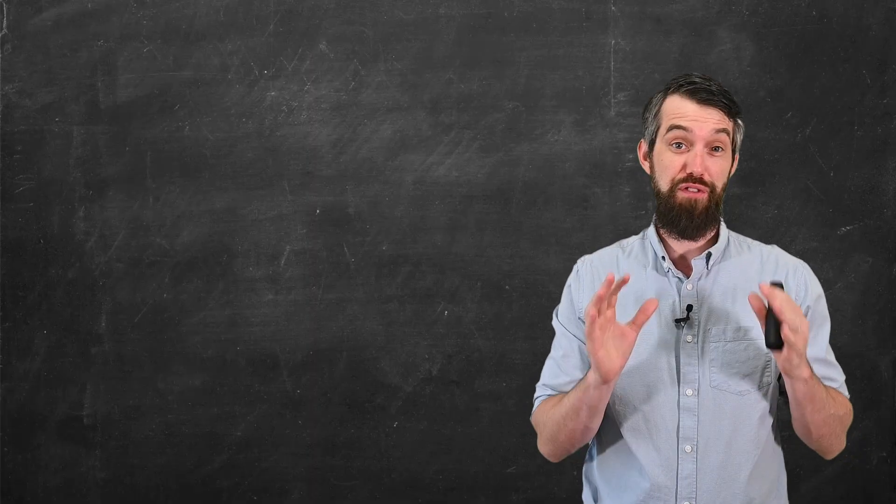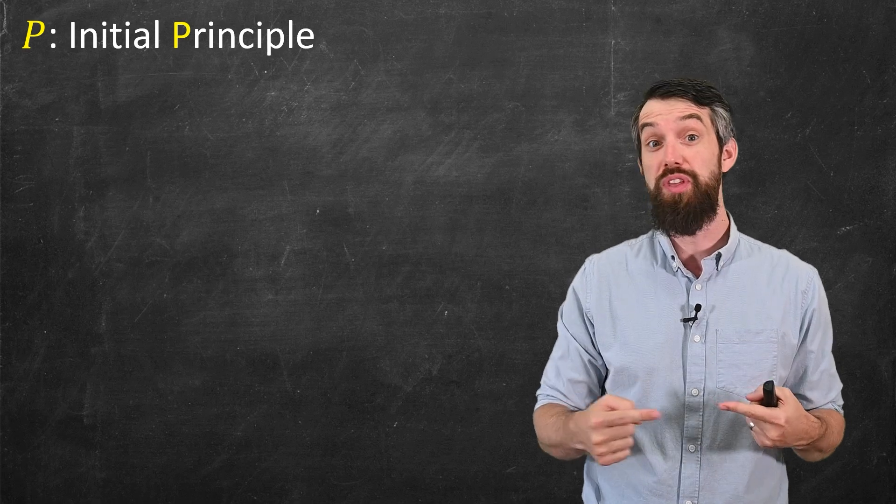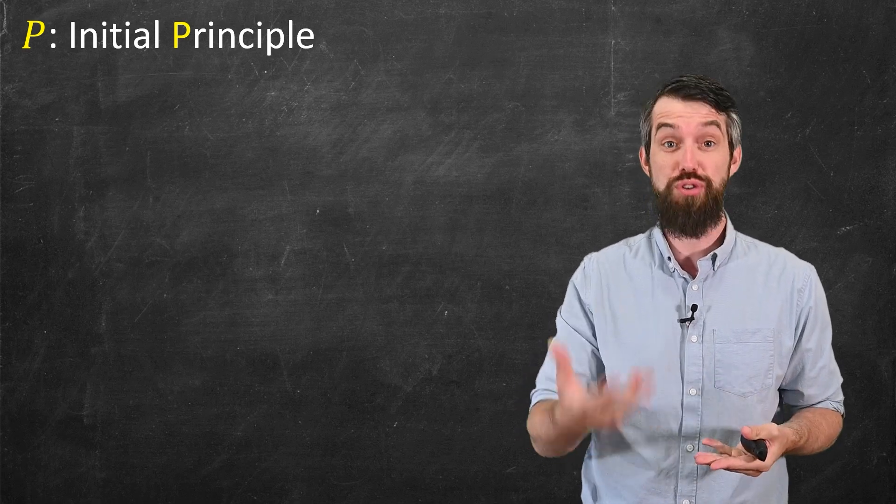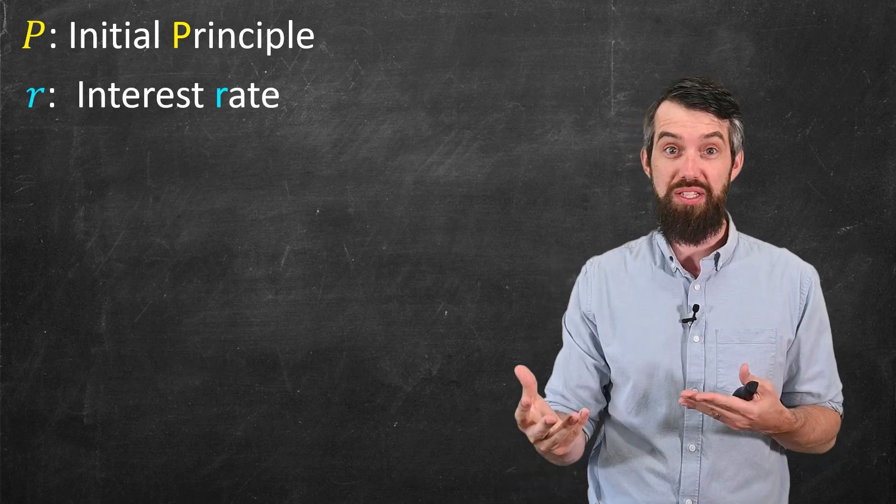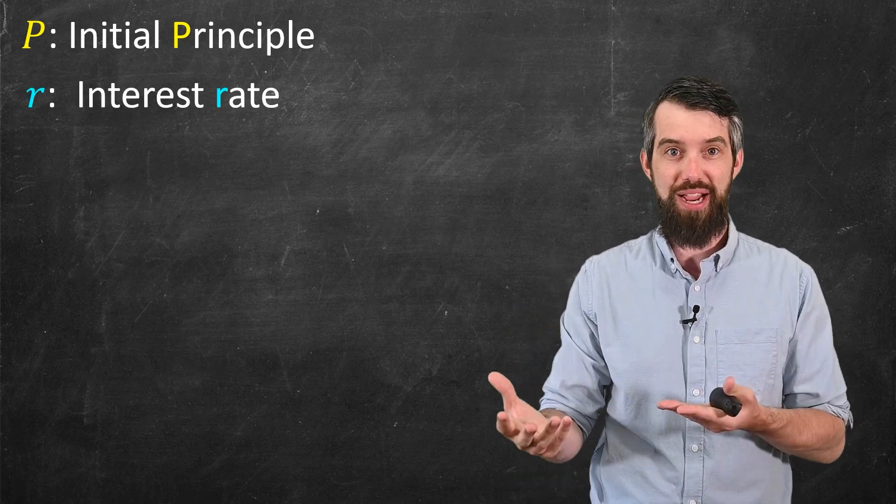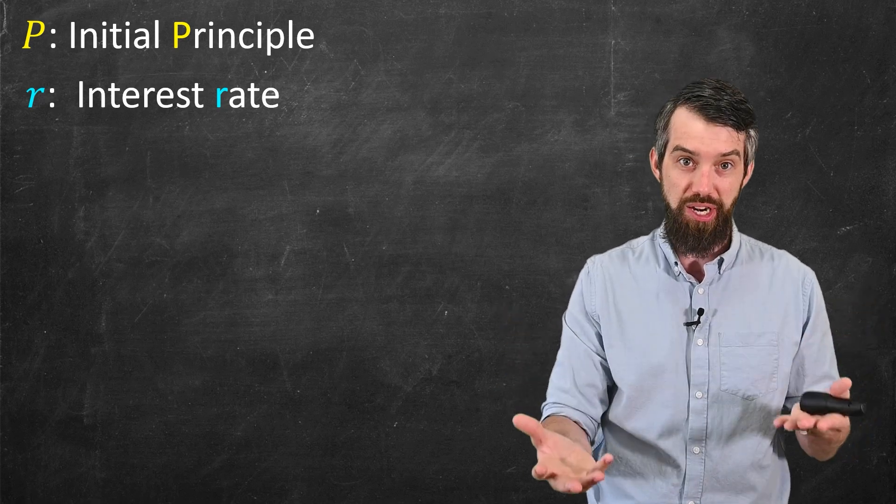So let's try to come up with a formula for this. Let me establish a few terms. I'm going to let P denote the initial principal. For example, $100 would be the amount that would be loaned out. And then r stands for the interest rate. So for example, 10% interest in some period, like a year.